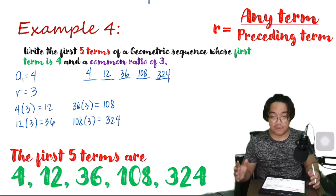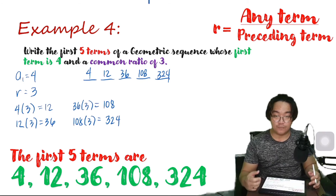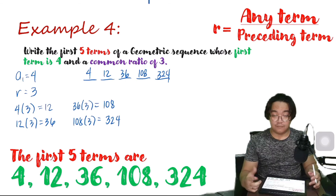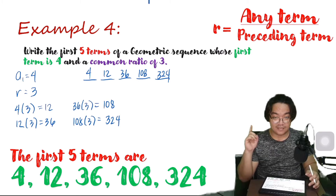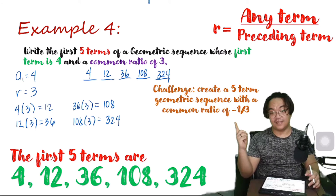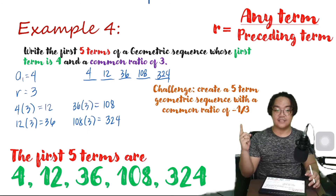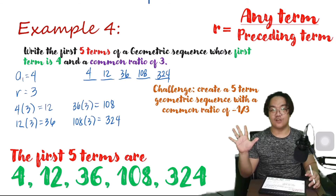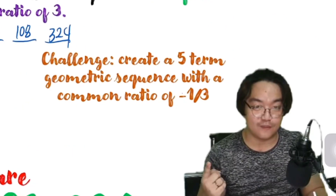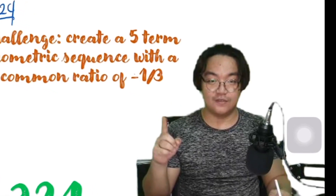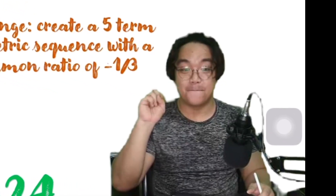So that would be my last example for this video. I hope you learned something from today's lesson. Before the next video, I will leave the challenge question here beside me. The challenge question is: create a five-term geometric sequence with a common ratio of negative one-third. Put your answers in the comments down below, and I'll see you in the next video. Peace.